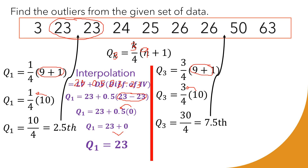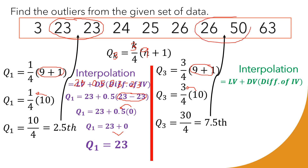Since we don't have an exact location, we need interpolation again. The two involved values are 26 and 50. Using the smaller value: 26 + 0.5 × (50 − 26). Writing it clearly: Q3 = 26 + 0.5 × (50 − 26).